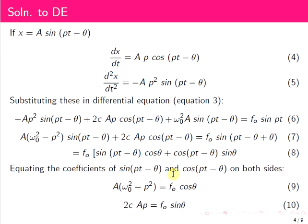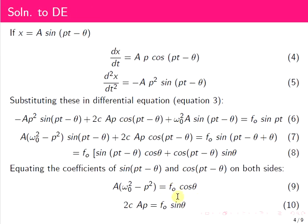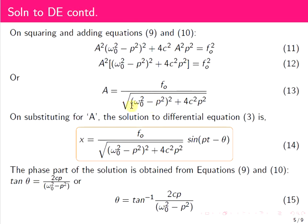Equating the coefficients of sin(Pt − θ) and cos(Pt − θ) on both sides, we get: A(ω₀² − P²) equals F₀ cos θ, and 2cAp equals F₀ sin θ. Squaring and adding these two equations, the right-hand side gives F₀², and the left-hand side gives A²[(ω₀² − P²)² + 4c²P²]. Taking A² outside, we find the amplitude A equals F₀ divided by the square root of (ω₀² − P²)² plus 4c²P².